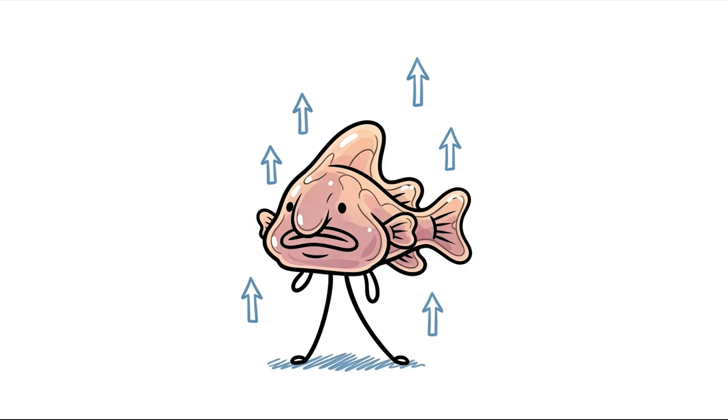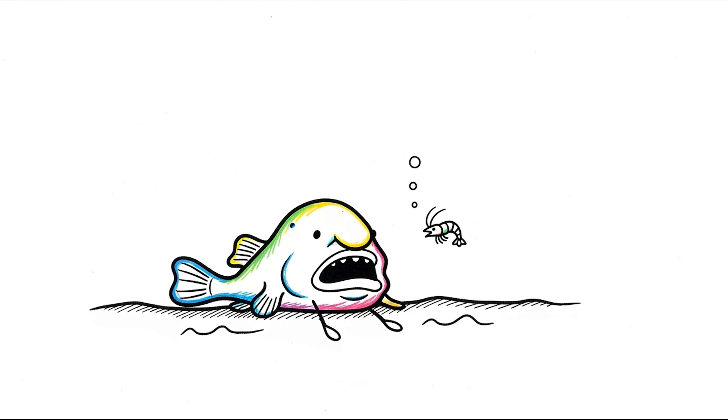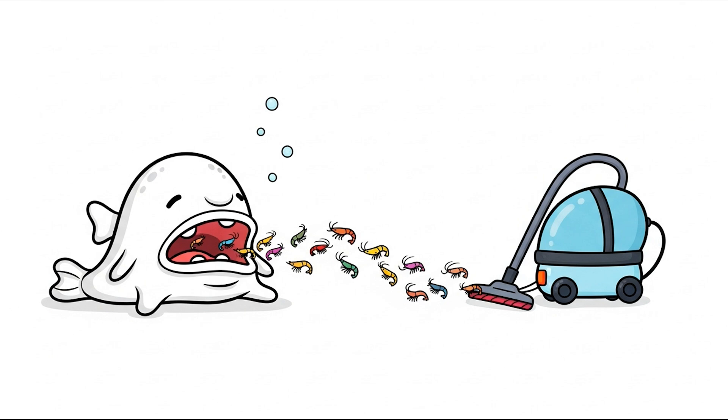Most fish rely on a swim bladder filled with gas to control their buoyancy. But at the immense pressures of the deep, such a bladder would be crushed faster than a soda can under a truck. The blobfish, however, has evolved a gelatinous body, less dense than water, allowing it to float effortlessly just above the seafloor without expending precious energy.